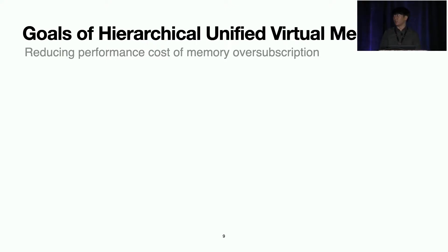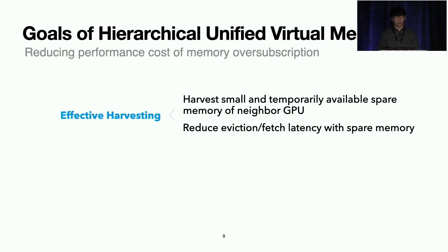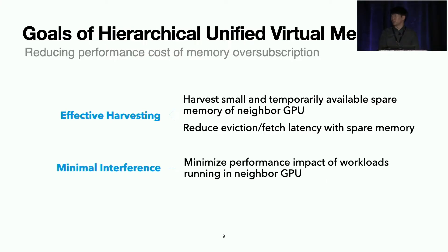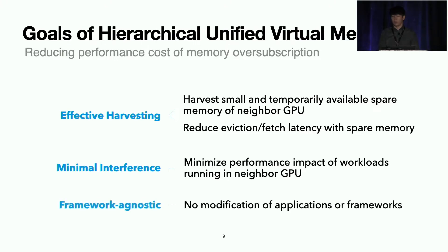There are several goals in HUVM to reduce the performance cost of memory over-subscription. First, effective harvesting: we need to harvest small and temporarily available spare memory of neighbor GPUs to reduce eviction and fetch latency. Second, we need to minimize the performance impact on workloads running on neighbor GPUs. Finally, HUVM needs to be framework agnostic — since different frameworks may run on harvesting and yielding GPUs, there should be no modification of applications or frameworks.